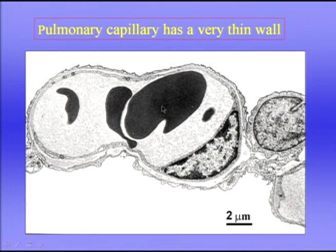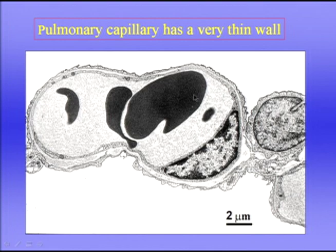That's not surprising when we look at the electron micrograph of a pulmonary capillary. The wall — the blood gas barrier — is fantastically thin. So it's not surprising that when we raise the pressure outside the capillary above the pressure inside, the capillaries simply collapse.